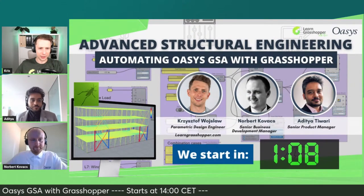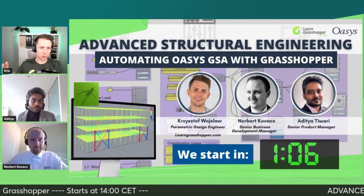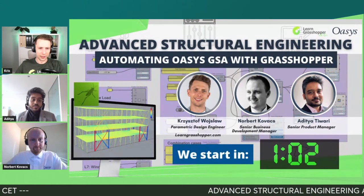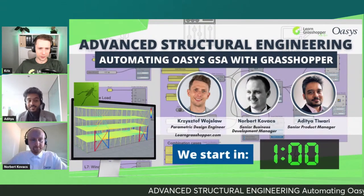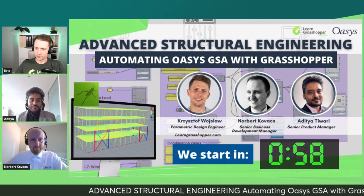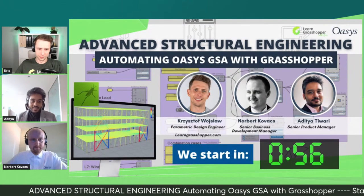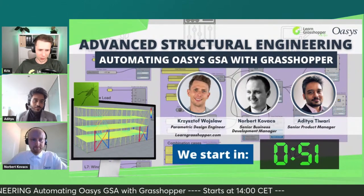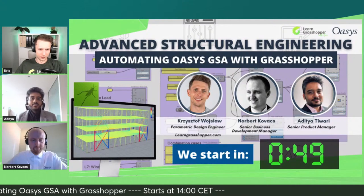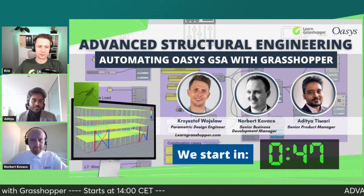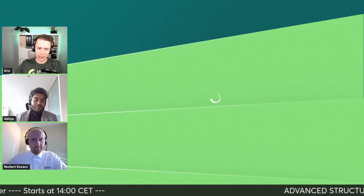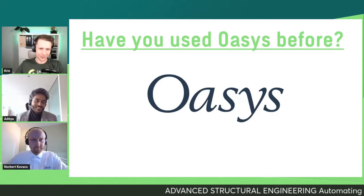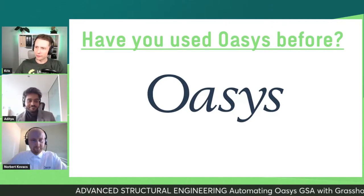The plugin requires a GSA license to run. You can download it from the Package Manager within Rhino — just open Package Manager and search for GSA to find the plugin. You can download it, but you won't be able to use it without a valid GSA license.